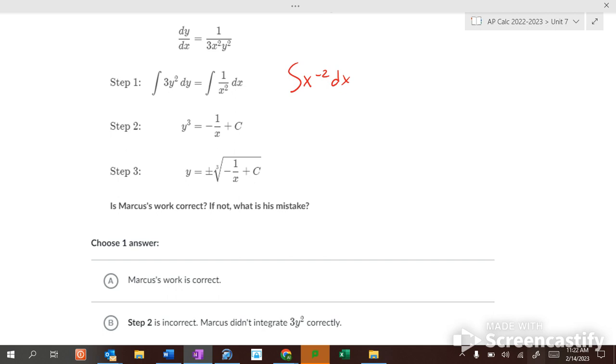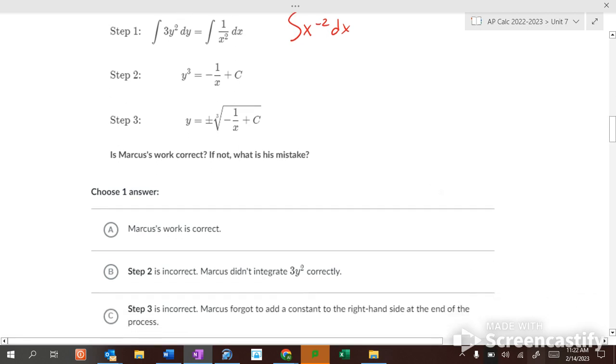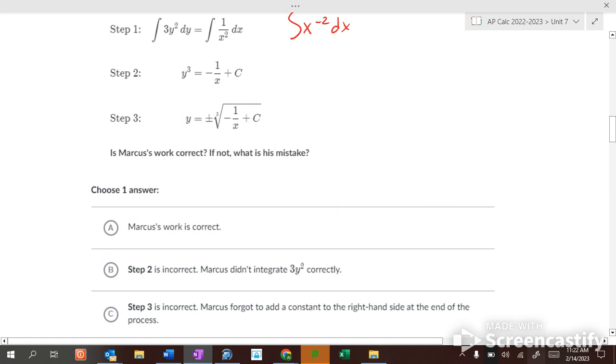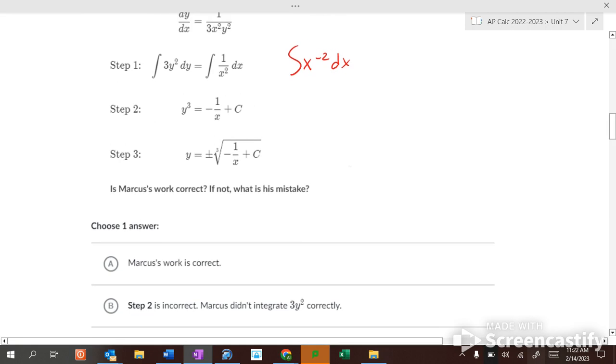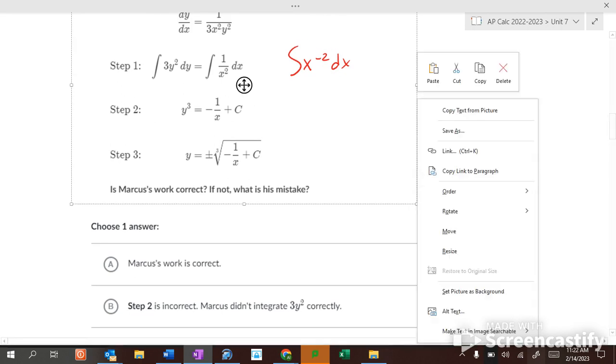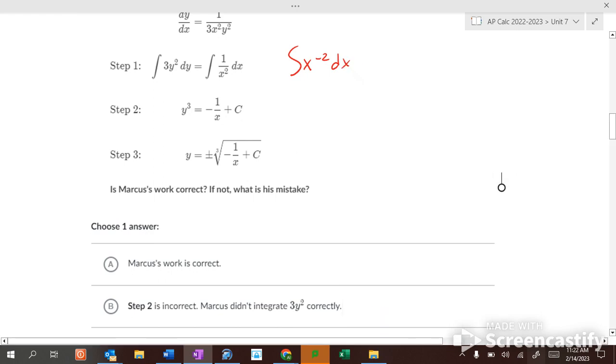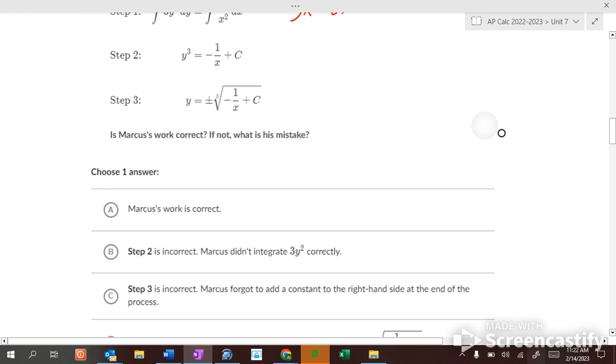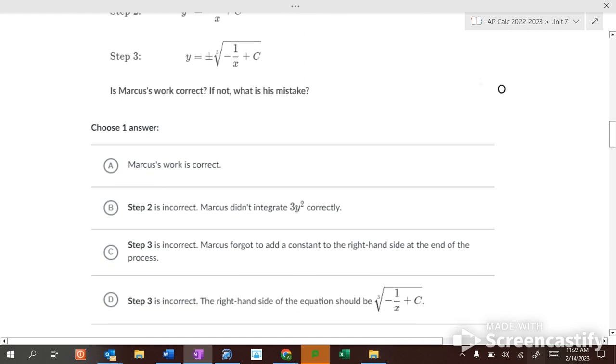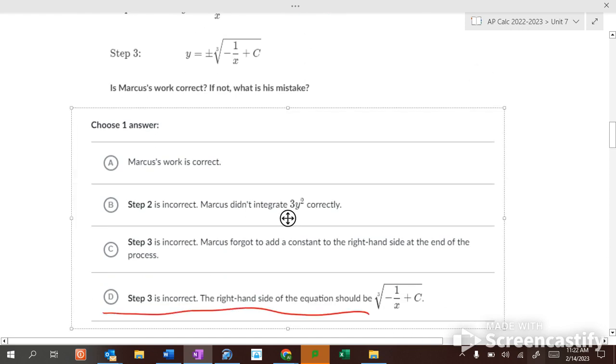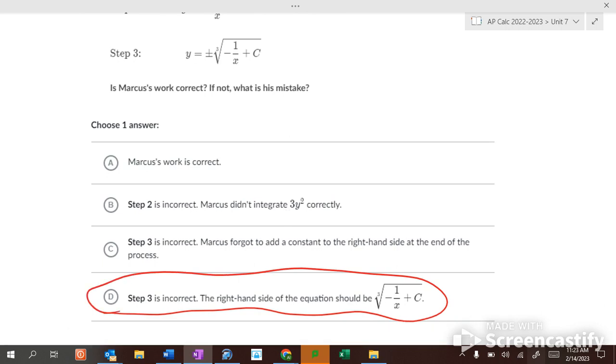And then he took the cube root of each side. So if he takes the cube root of each side, it looks like that. Should there be a plus or minus? Because x cubed, hmmm. The right answer of the equation should be that, because it shouldn't be a plus or minus, because it's an odd power.